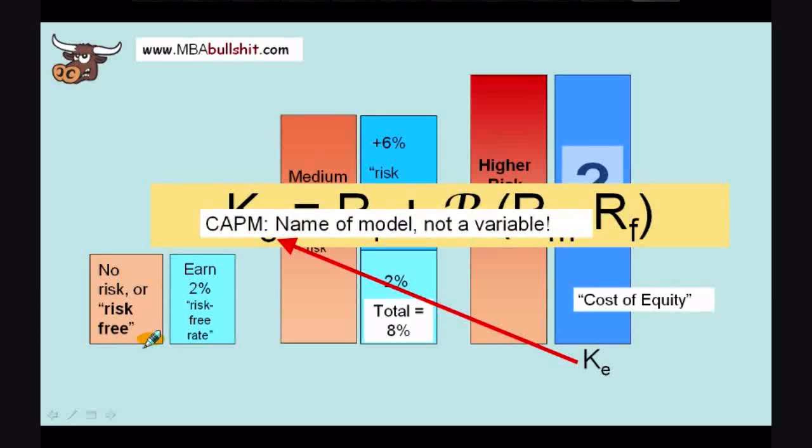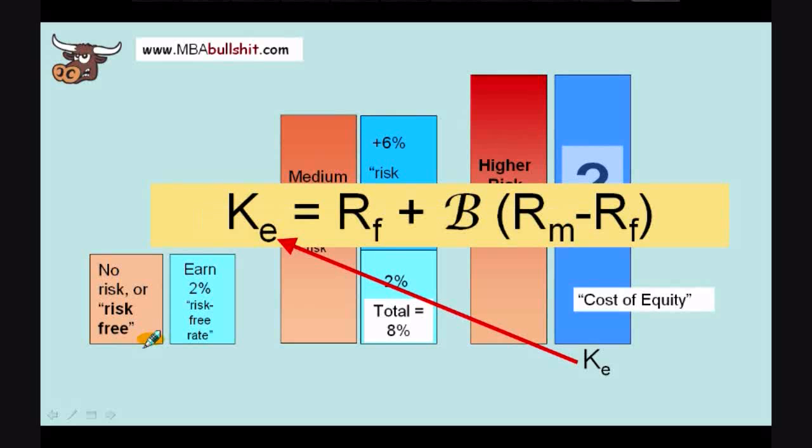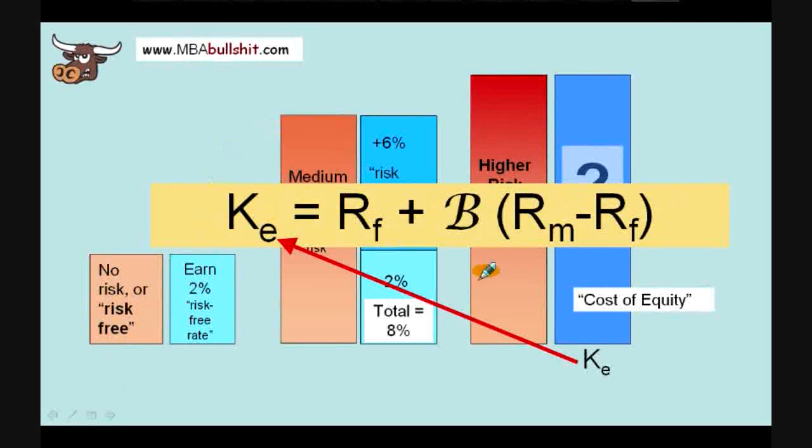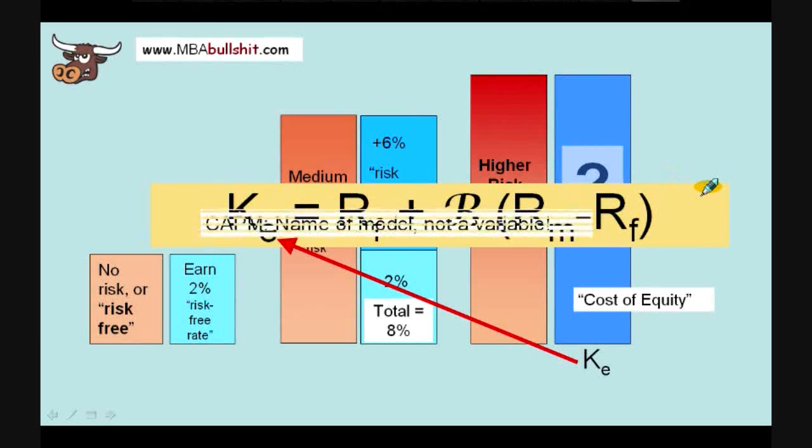By the way, CAPM is the name of the model. It is not a variable that you find in here. Because you might be saying, where on earth is the CAPM here? I don't see any letter C, I don't see any letter A or P or M. CAPM is just the name of this whole concept. It is the name of this model or the name of this mathematical formula.